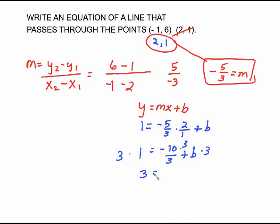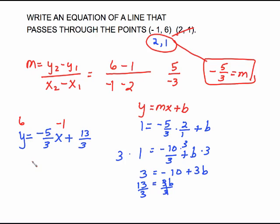So, this is 3 equals negative 10 plus 3b. We just have to solve this equation for b. Add 10 to both sides is going to make 13. And then divide both sides by 3 gives me a y-intercept of 13/3. So, my answer is y equals the slope we found in the beginning, negative 5/3 x, plus the y-intercept we just found. Now, here's a neat thing. To check, what you want to do is use the other point. We use the 2, 1. Let's check by putting negative 1 in for x and 6 in for y and see what happens. Negative 5/3 times negative 1 is positive 5/3 plus 13/3 makes 18/3, which is 6. It checks.